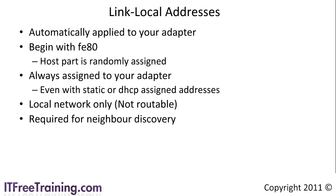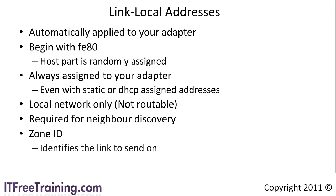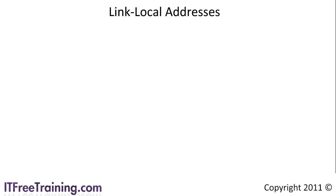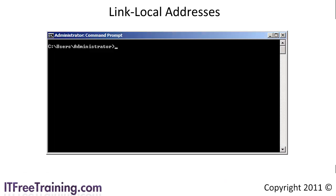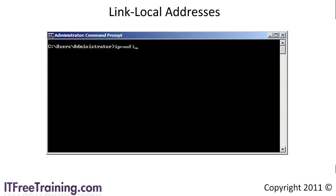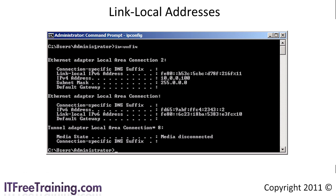The big difference with link local addresses is that you have a zone ID. The zone ID identifies the link the data will be sent over. Each adapter gets one link local address and a unique zone ID. To identify which network to send the data over, the zone ID is used. The syntax is the IP address followed by a percentage sign and then the zone ID. Link local addresses are a bit confusing, so to better understand, I will go through pinging another computer using its link local address. From the command prompt, I will run ipconfig to show the adapters on this computer and their IP addresses.